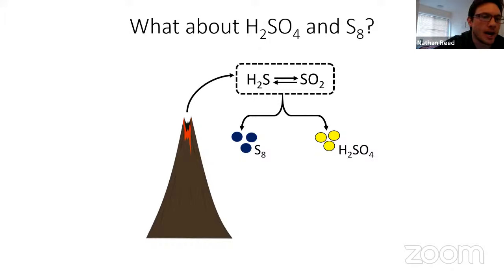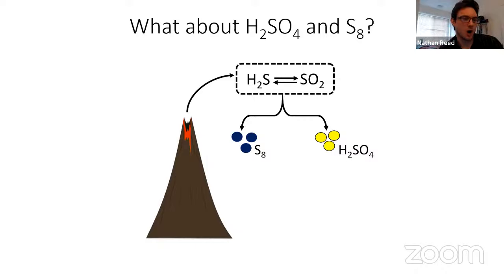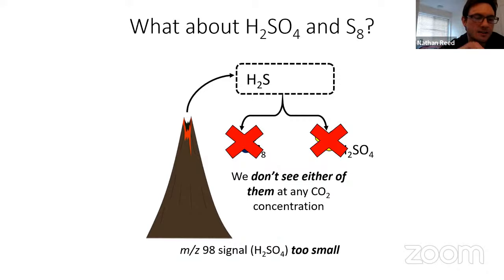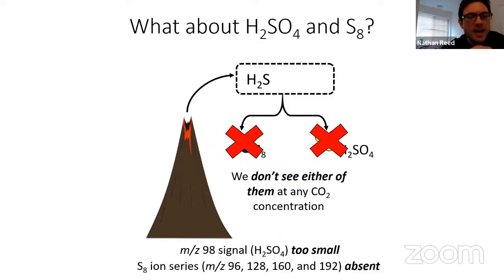Regarding H2SO4 and S8 — usually thought to be the main sulfur reservoirs in the Archean atmosphere — we didn't see either of them at any concentration. The MZ98 signal was far too small compared to other oxidized sulfur signals to show evidence for pure H2SO4 aerosol. The S8 ion series — namely MZ96, 128, 160, 192 — was completely absent. H2S did not produce either of these, even in a more oxidizing mixture with high CO2.